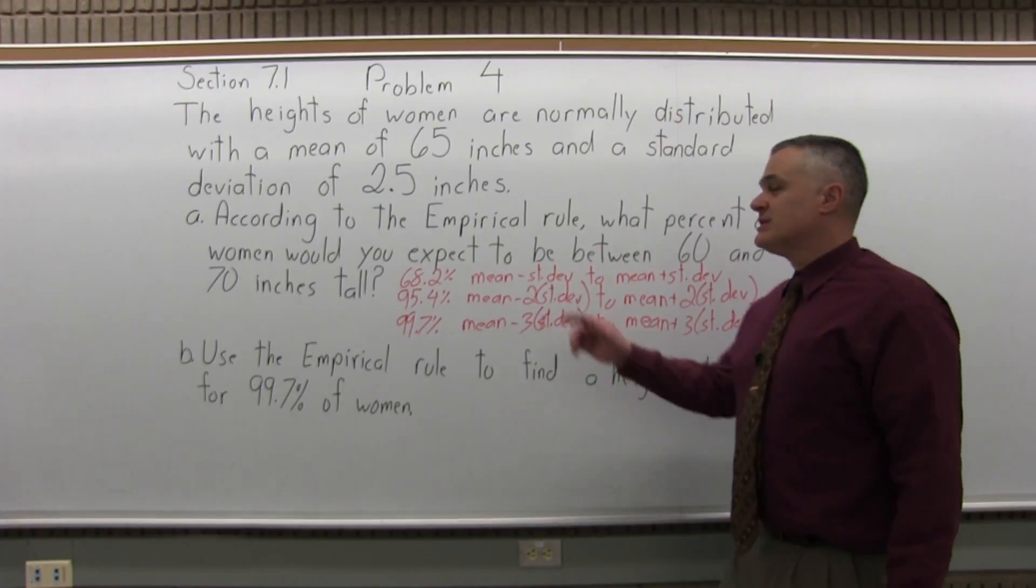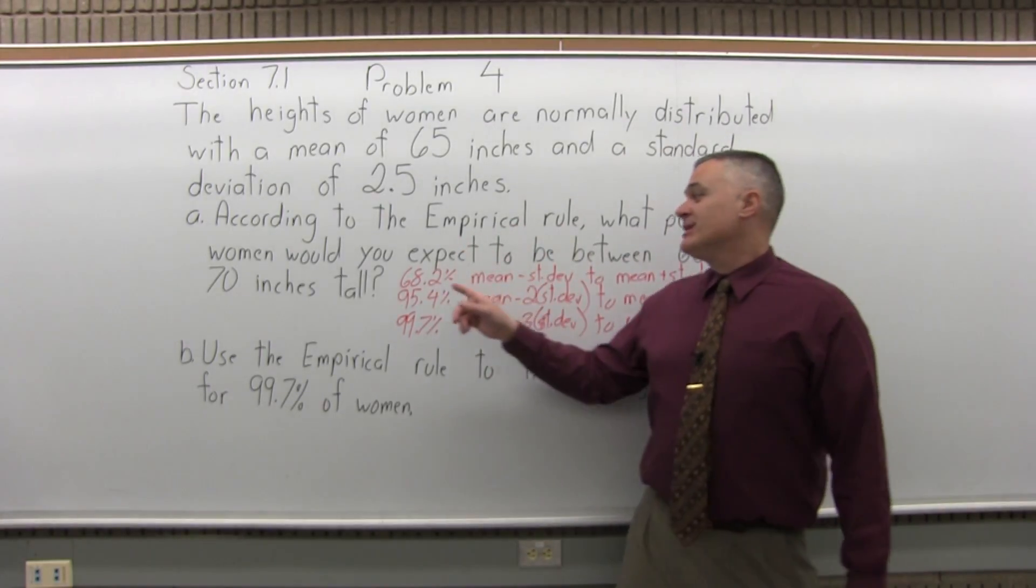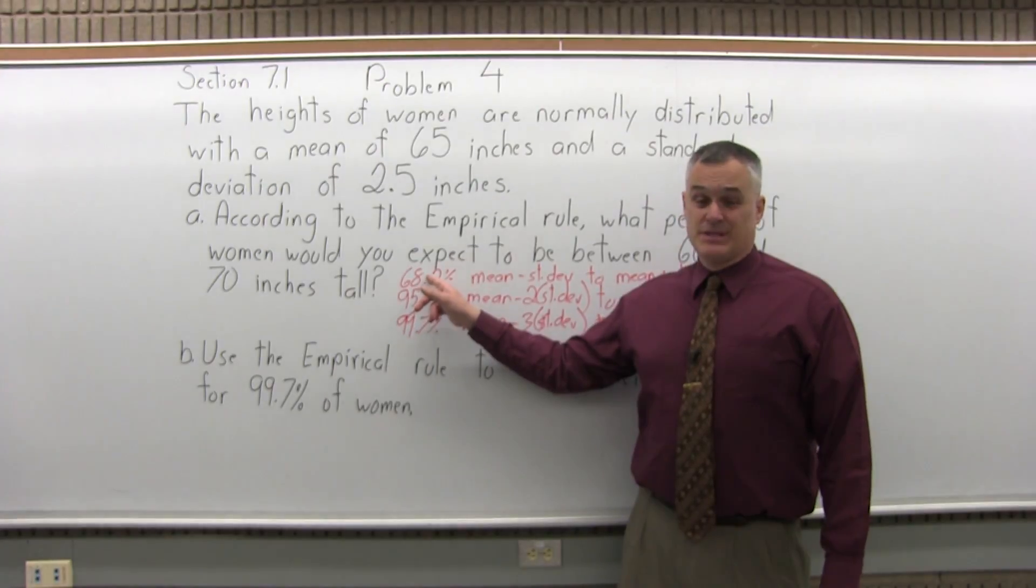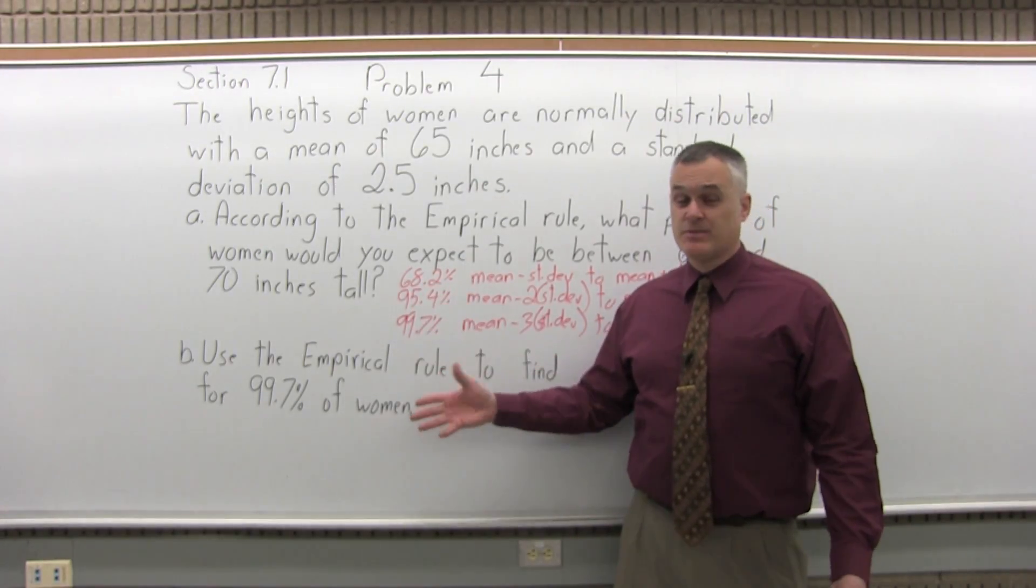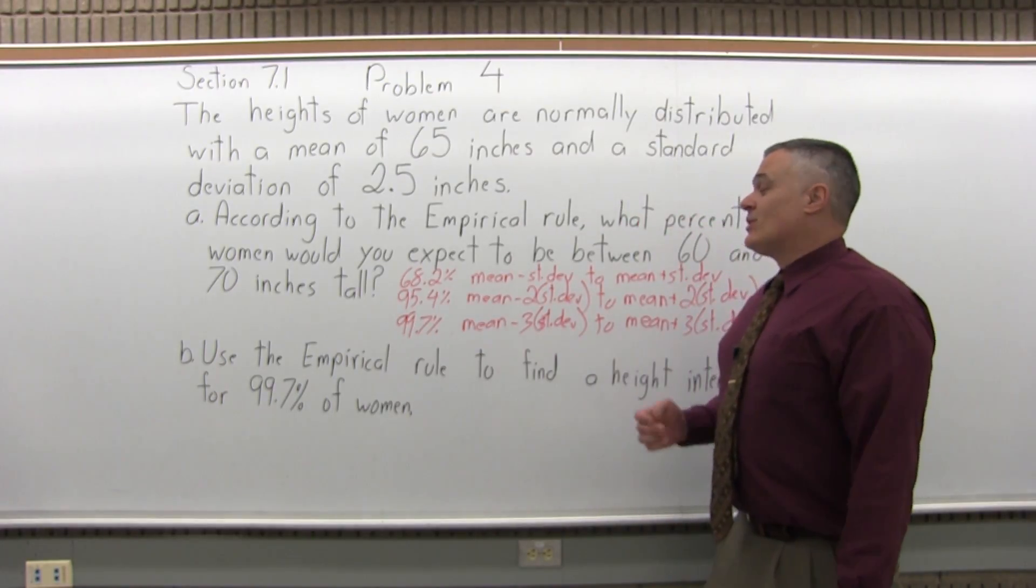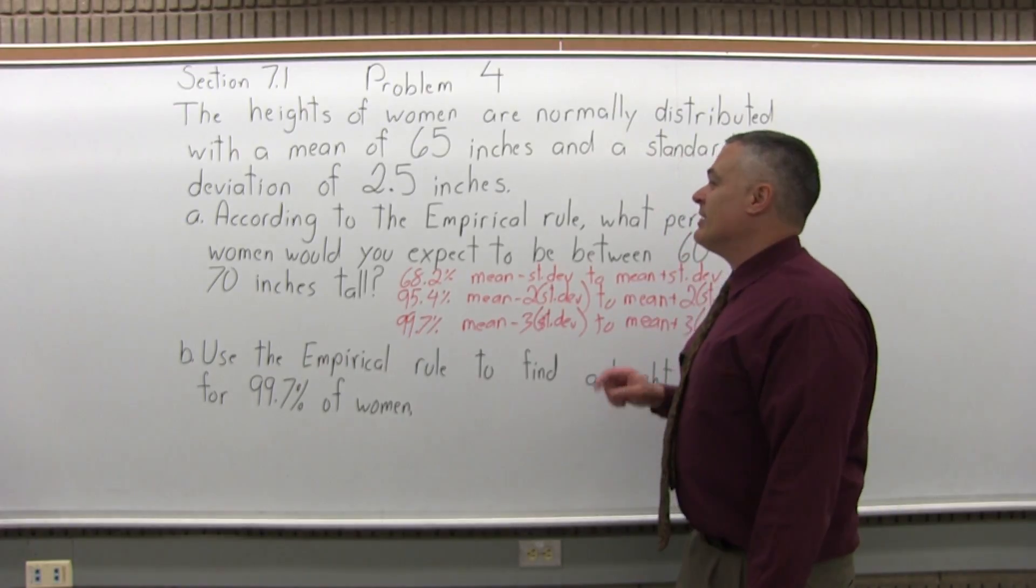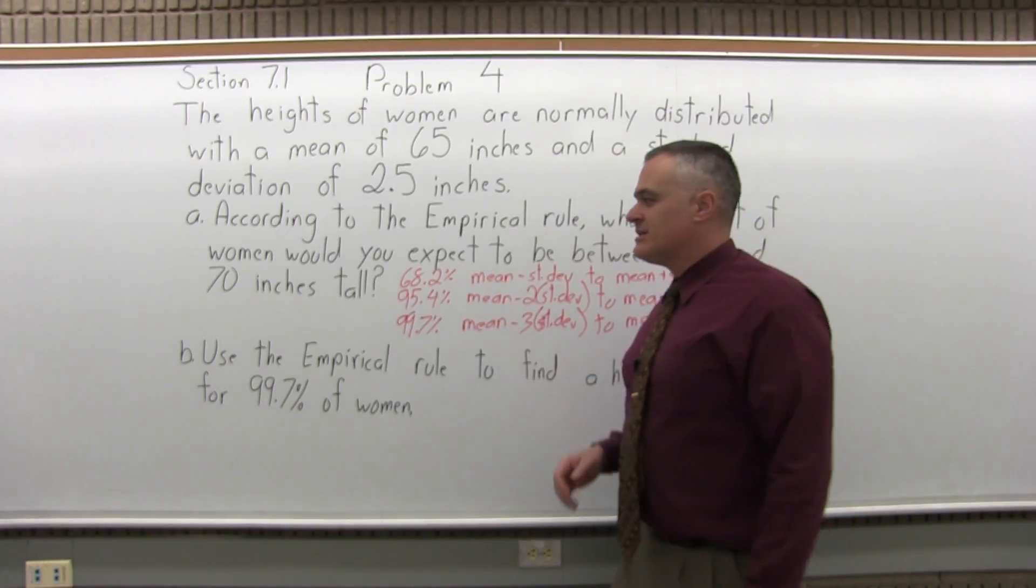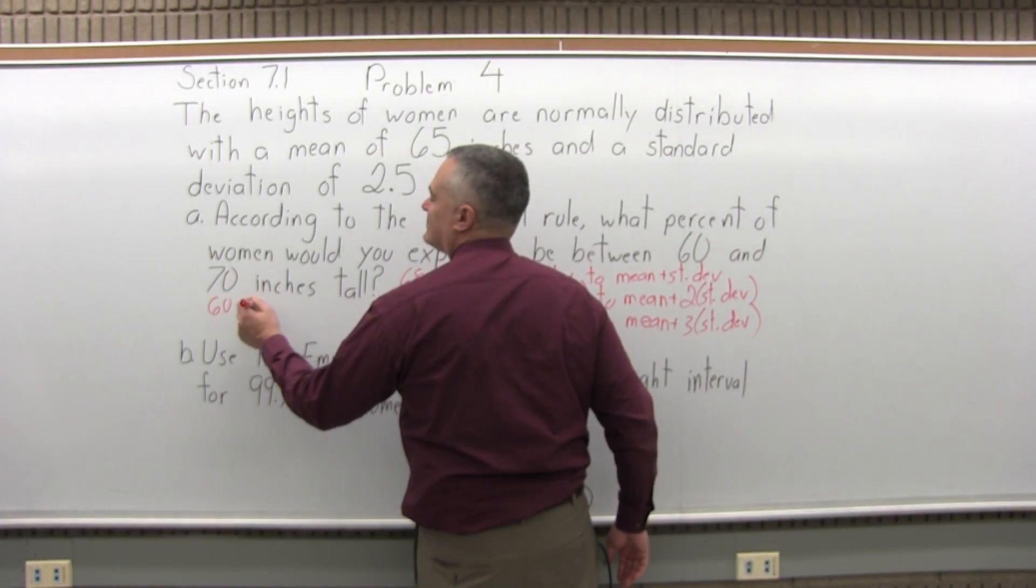Because the question says empirical rule and it's looking for a percentage of the data, I know the answer is going to be 68.2% or 95.4% or 99.7%. It's going to be one of those because that's how the empirical rule is set up. The heights go from 60 to 70 inches.